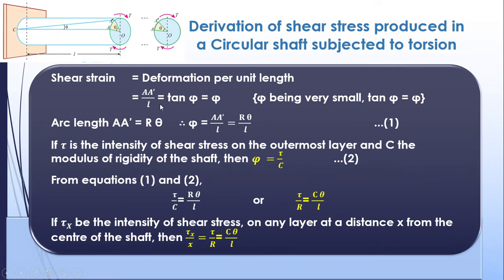AA-dash is the change in length and L is the original length of the shaft. So AA-dash divided by L equals tan(phi), which equals phi, since phi is very small. Considering the circle, AA-dash is an arc, and arc length equals R times theta, where R is the radius and theta is the angle subtended.